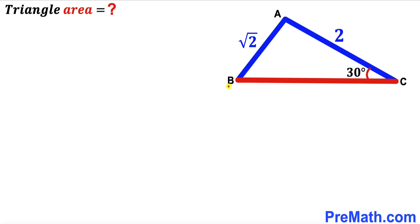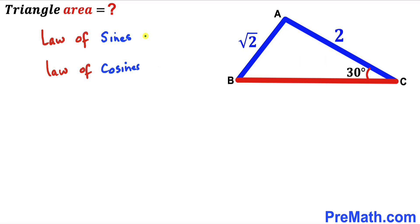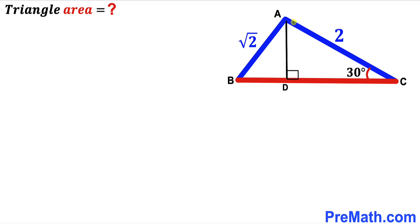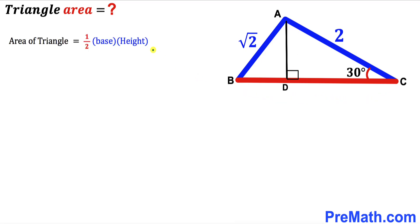Let's get started. Since we are interested in calculating the area of triangle ABC, the straightforward approach would be the law of sines or the law of cosines. However, I am going to show you an alternative approach — we are going to drop a perpendicular AD on base BC, and then recall the area of a triangle formula.